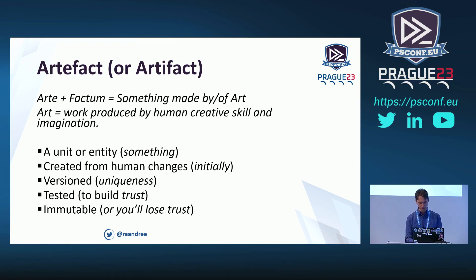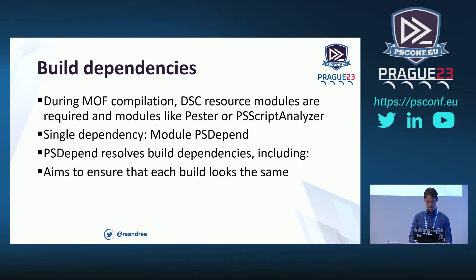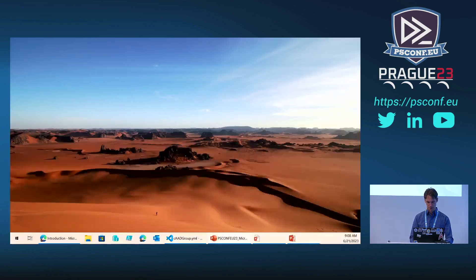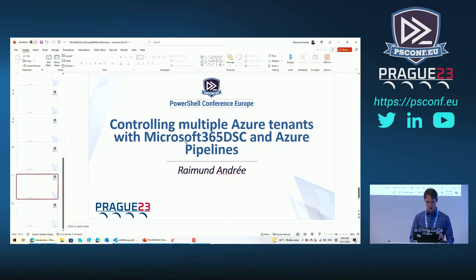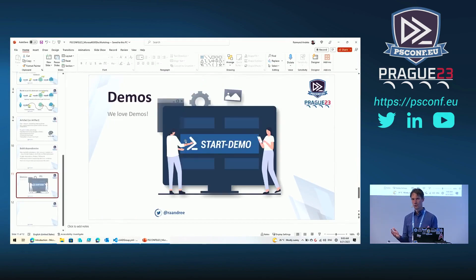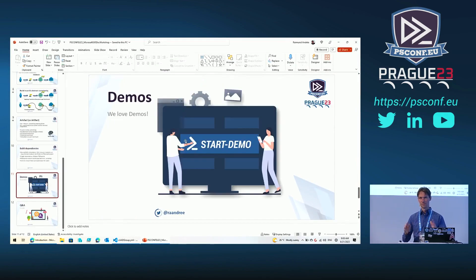We use the concept of artifacts to make sure our changes are actually applied to the individual tenants. Let's go right into a demo. How many tenants do you control in your business environments, just to get a rough idea? The standard seems to be three — dev, test, prod.